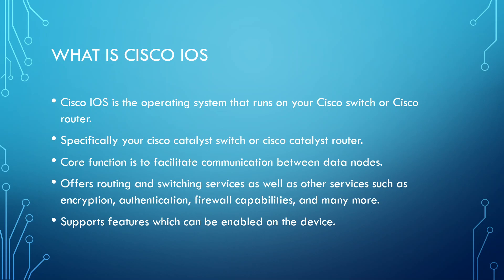Just like how your computer or laptop runs a Windows or Linux operating system — where the core function is to allow it to interact with your machine, but it also comes with other features — it's the same thing with Cisco IOS. The core services are to perform routing or switching. However, there are other features we can enable on our devices, such as encryption, authentication, firewall capabilities, and QoS. There's a whole bunch of features Cisco IOS allows us to enable, but at its core it supports switching of frames or routing of packets.